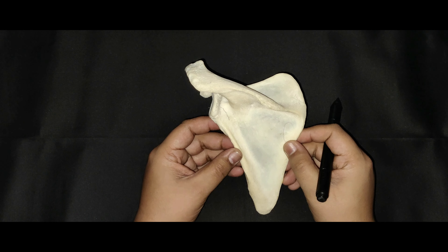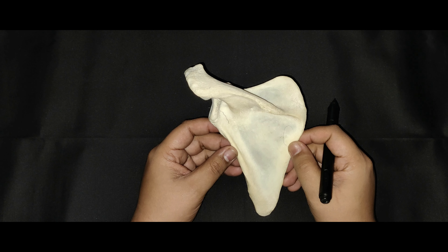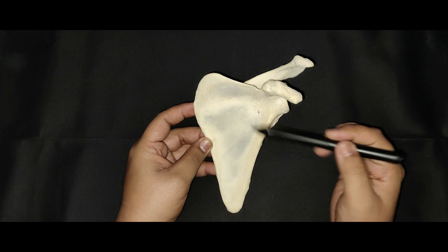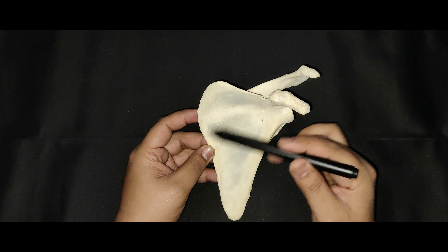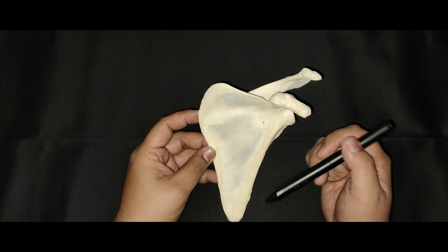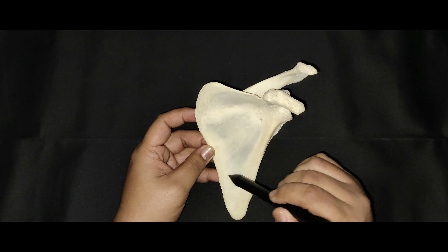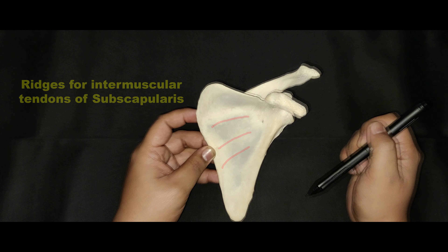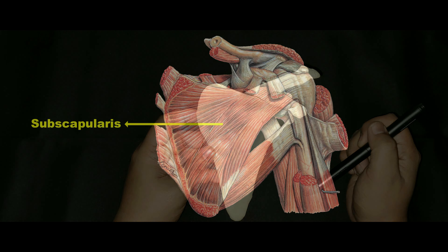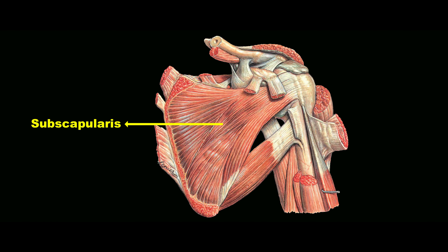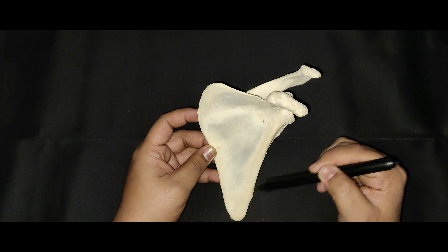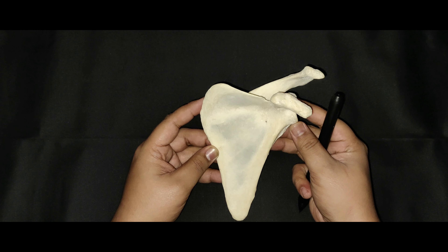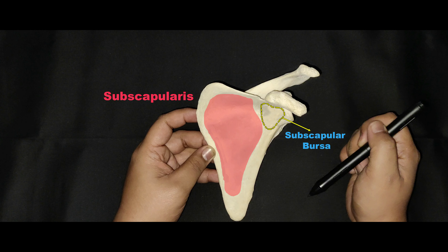Coming to the features and attachments, let us first see the surfaces. The costal surface, also known as the subscapular fossa, is concave and directed medially and forwards. It presents three longitudinal ridges which provide attachment to the intramuscular tendons of the subscapularis muscle. The subscapularis is a multipinnate muscle and it arises from the medial two-thirds of the scapular fossa, costal surface, except near the neck where a subscapular bursa intervenes between the neck and the subscapular tendon.